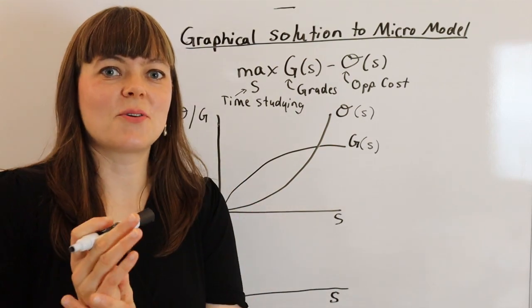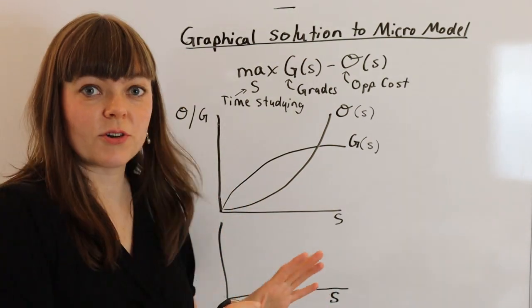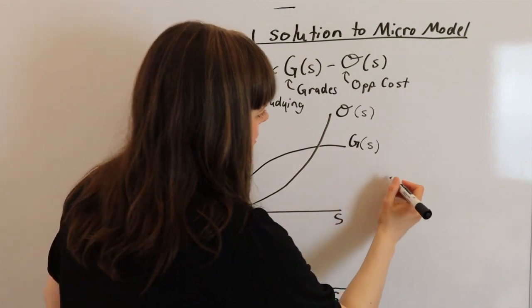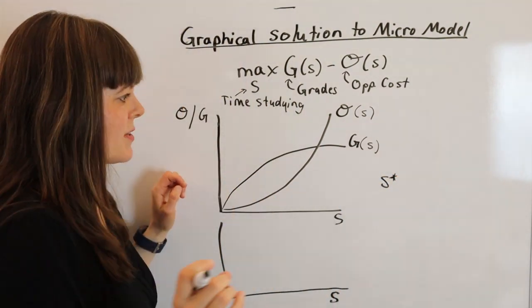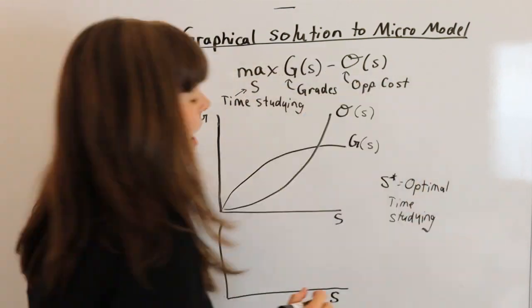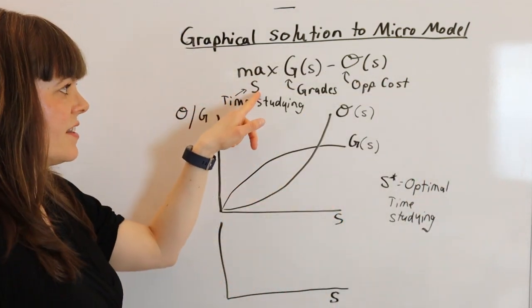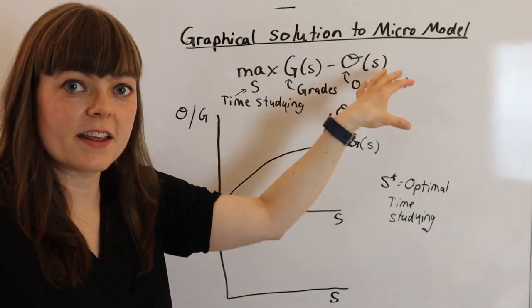The first question you want to ask is, what is the optimal time spent studying? We've talked before about how S star represents the optimal time spent studying. And S star is different than S.